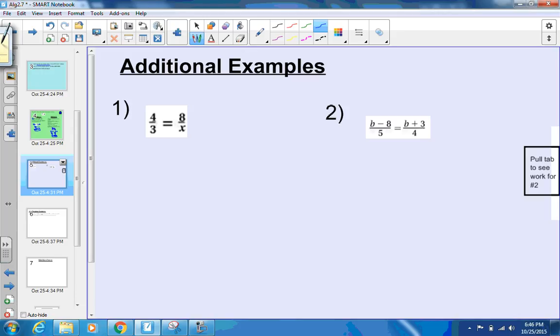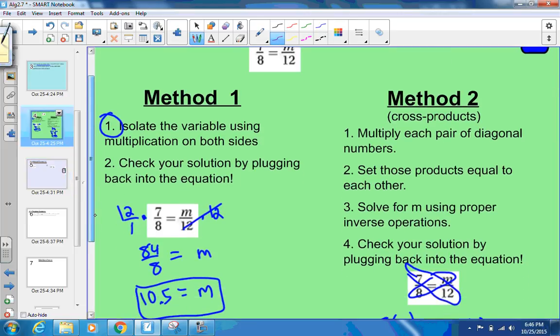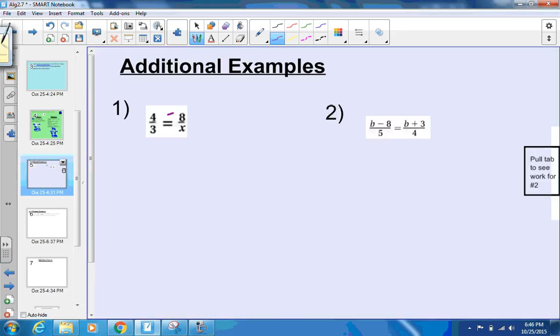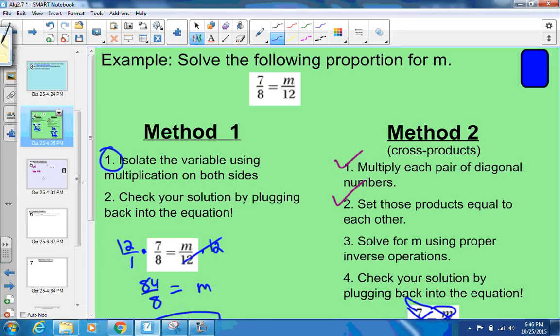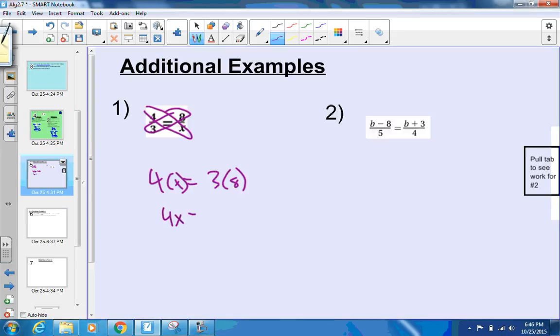We're going to practice it with a couple more examples here. Number 1 we'll do real quick. We're going to use that cross products property again. Multiply each pair of diagonal numbers. We're going to do 3 times 8 and 4 times x. So 4x on the left side, set them equal to each other. 3 times 8. That's 4x equals 24. We have to do the inverse operations to solve for x. Divide by 4 on both sides. So x equals 24 divided by 4, which is 6.